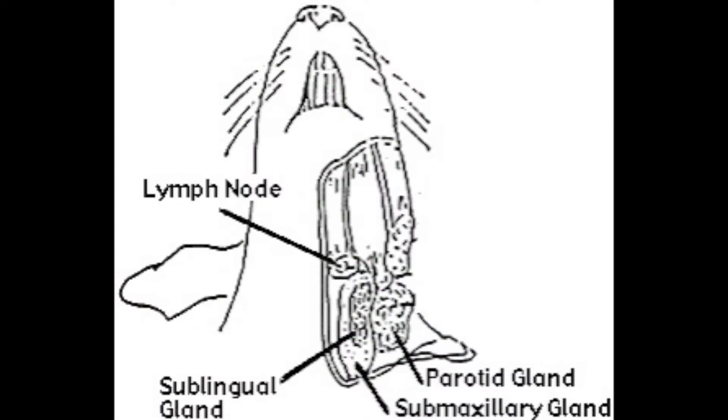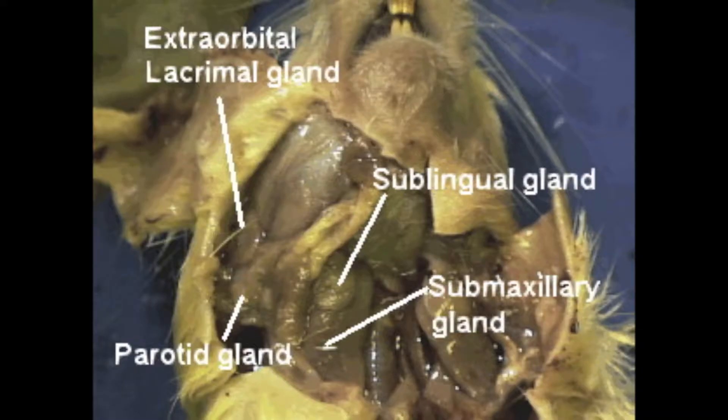First off is the bulbous-like structured parotid gland, which lies just beneath the ear and extends over the ventral lateral surface of the neck to the shoulder. The submaxillary glands are just ventral to the slightly larger parotids and are inseparable from the more anterior overlying sublingual glands.